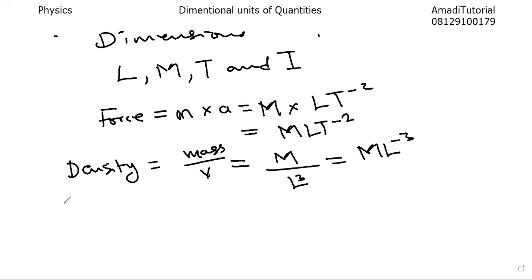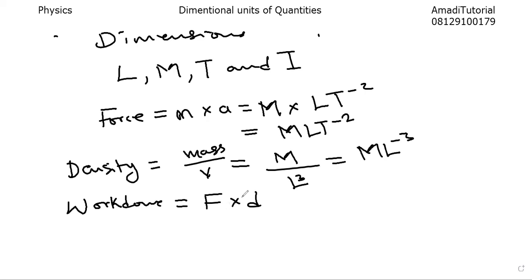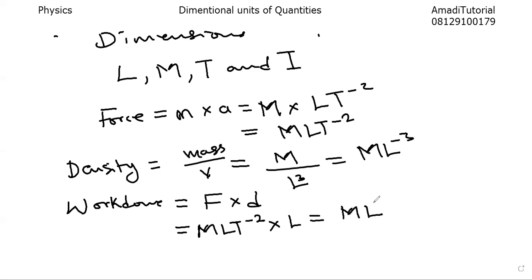How about the dimensional unit for work done? The definition of work done is force times distance. We already know the dimensional unit for force is M, L, T raised to the power of minus two. Distance in fundamental form is L. So work done will be M, L raised to the power of two, T raised to the power of minus two.